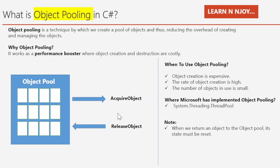Let's understand it with the diagram shown here. We have a pool of objects, meaning various initialized objects are available at a centralized location. Someone who wants to use an object can simply call the acquire object method, get an initialized instance, and perform some operation with it. Once the work is over, it is returned to the object pool by calling the release object method. With object pooling, we don't need to create objects again from the beginning because they have already been created and managed by the object pool.